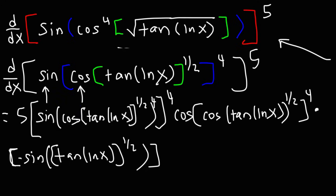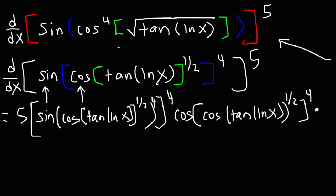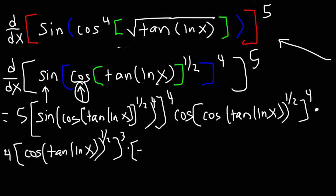Before finding the derivative of cosine, we need to work with the fourth power exponent first. Bringing the 4 to the front and keeping everything inside the blue brackets — cosine of (tan(ln x))^(1/2) — we subtract 1 from 4 to get 3. Now we can take the derivative of cosine, which is negative sine, and the angle of cosine is (tan(ln x))^(1/2).